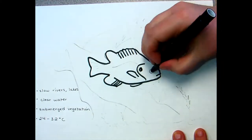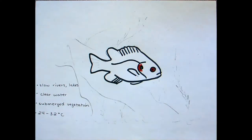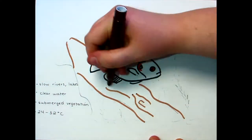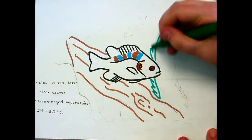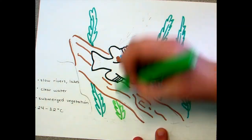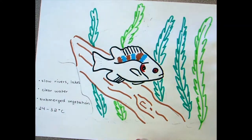Pumpkin seed enjoy quiet, slower-moving streams, small lakes and ponds, and shallow weedy bays of larger lakes. They prefer clear water and areas with submerged vegetation or brush and coarse woody debris. Pumpkin seed can be found in large schools and often make up the largest portion of fish in small warm water bodies. Their optimum water temperature is 24 to 32 degrees Celsius and they can tolerate low oxygen conditions well.